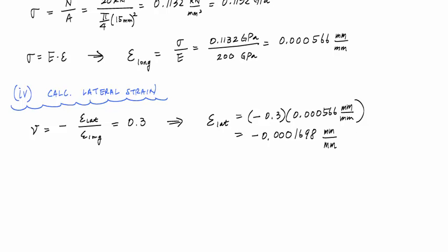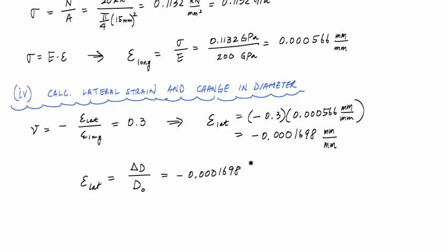And why didn't I just go ahead and calculate the change in diameter here? And the definition of the lateral strain is equal to the change in diameter divided by the original diameter. So here, this strain is negative 0.0001698. And that means the change in diameter is equal to times 15 millimeters. And this is negative 0.002547 millimeters. So that is the change in diameter.